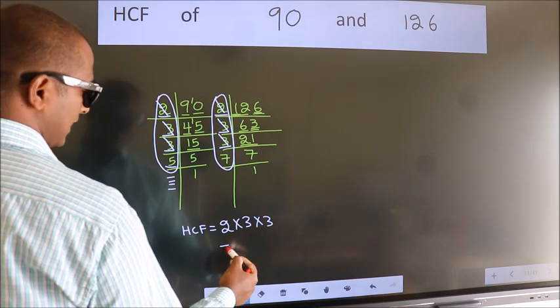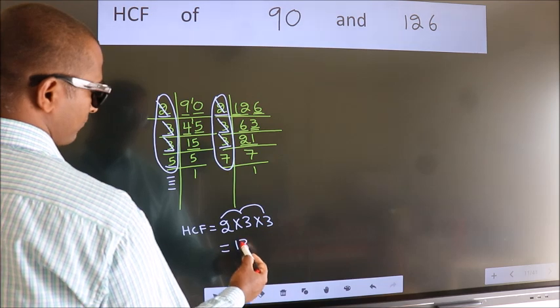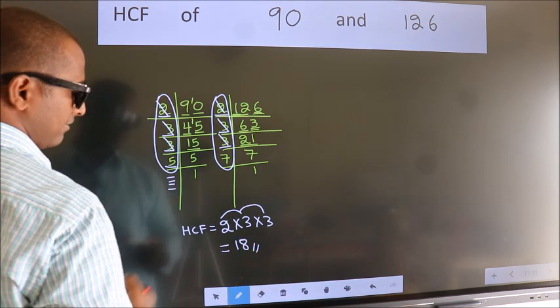So our HCF is 2 into 3, 6 into 3, 18 is our HCF.